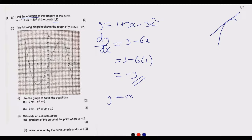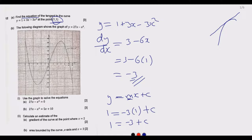We use the general equation y = mx + c, where m is the gradient. We know m = -3 at point (1, 1), because the two equations are tangent to each other and share the same slope. We can find c because we know x = 1 and y = 1 at that point.